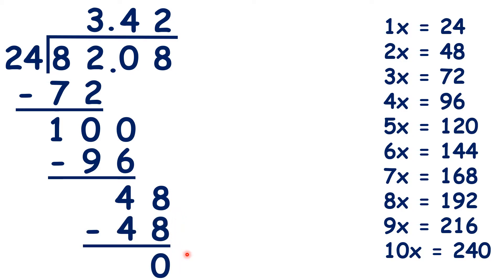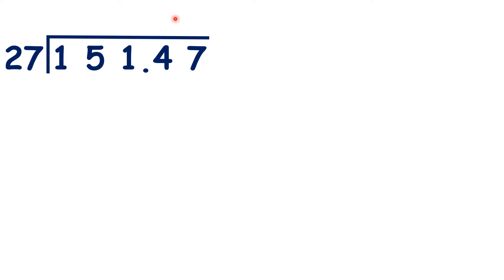So because we've already written the decimal point in our answer, we know that 82.08 divided by 24 is 3.42. Now pause the video and see if you can use the same method to divide 151.47 by 27.